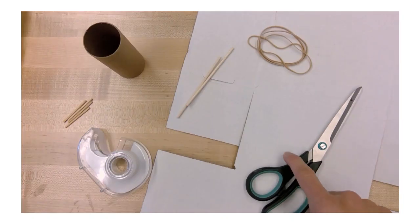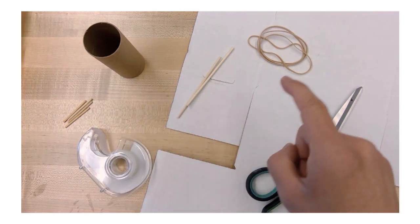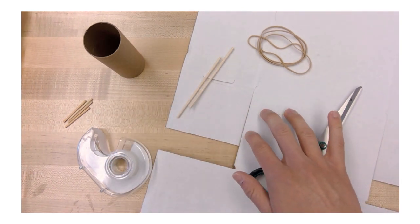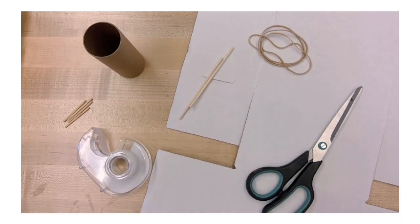To make your own guitar, you will need a pair of scissors, tape, a craft roll, two wooden dowels, four rubber bands, the cardboard box template, and matchsticks or toothpicks are optional.